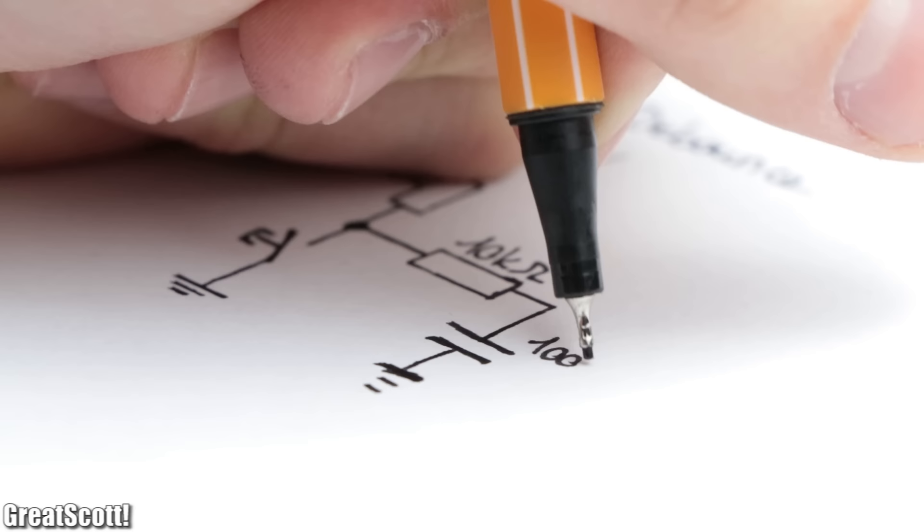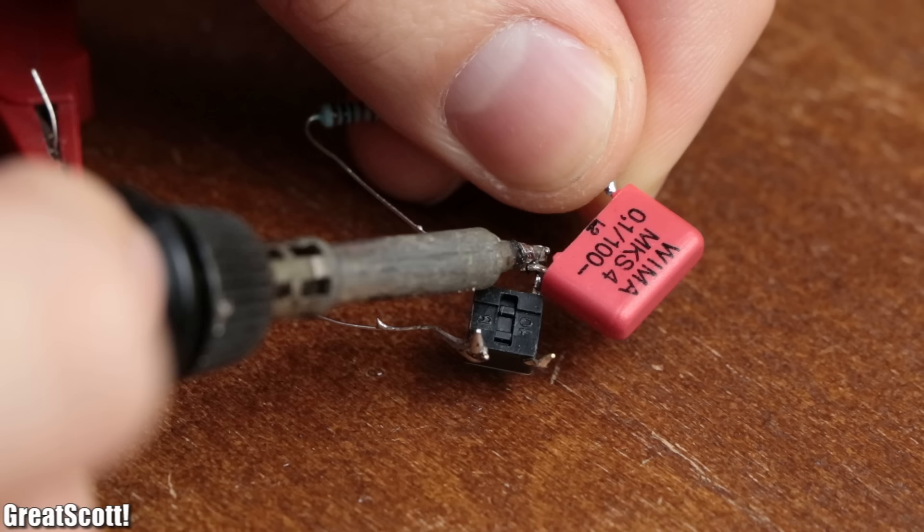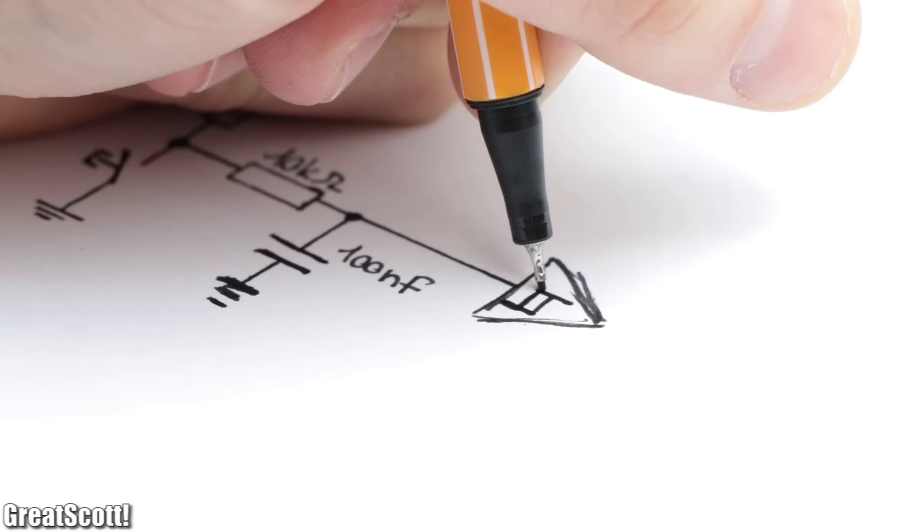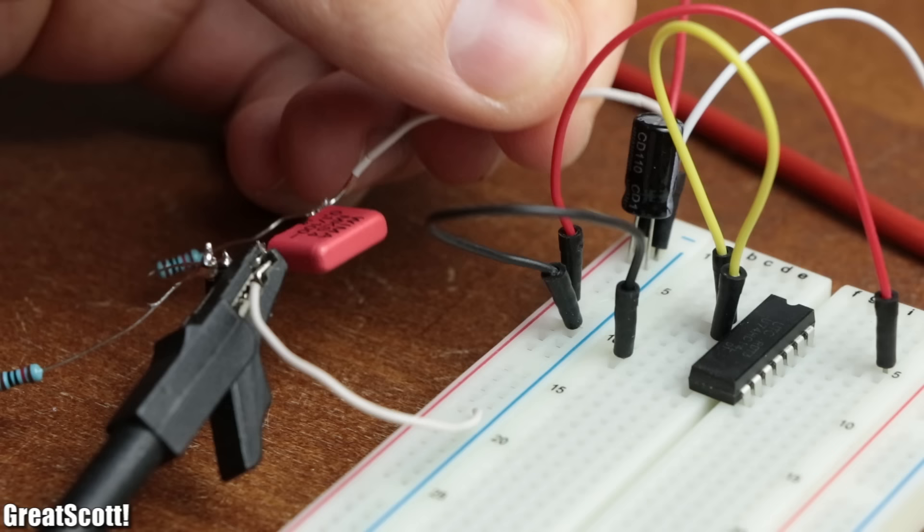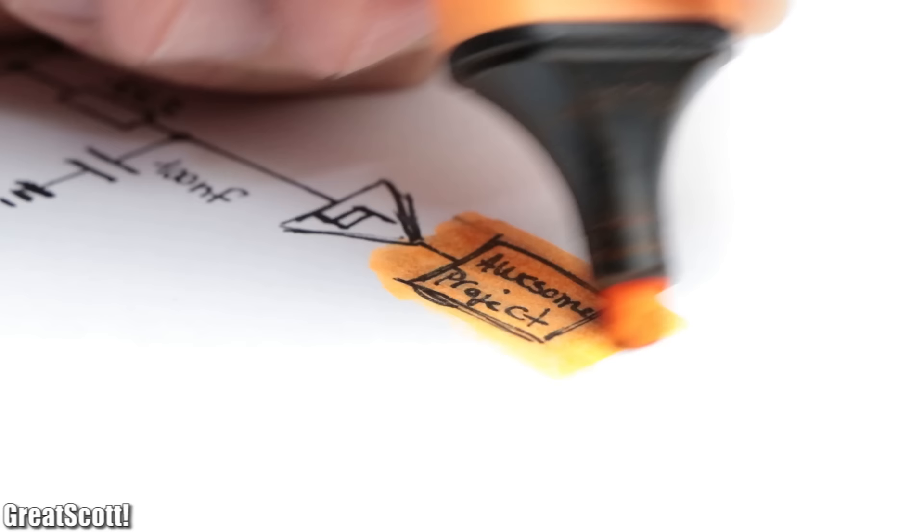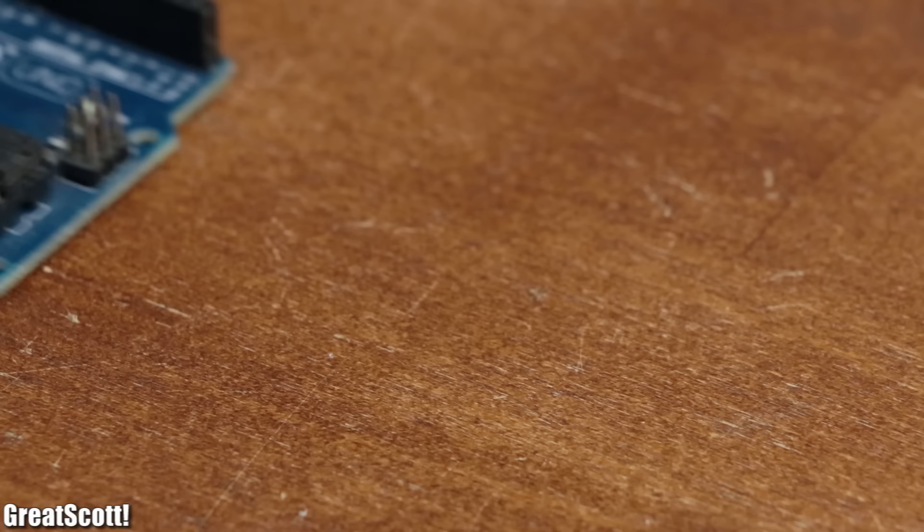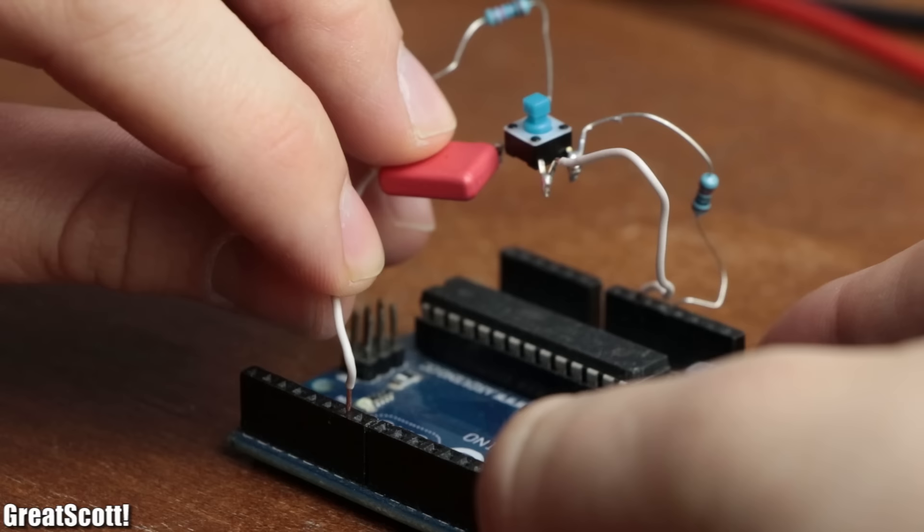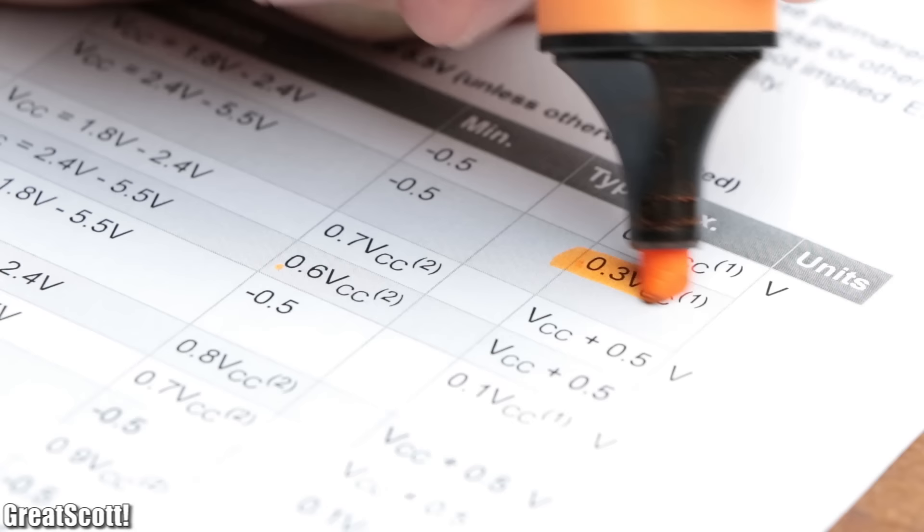That is why we must debounce it by firstly adding an RC network to the output of the switch to decrease the rise/fall time of the bounces, so that we can afterwards add a Schmitt trigger in order to recreate the sharp edges and thus create a fluid switch transition perfect for our project. But then again, if you would try to add the push button to an Arduino circuit, then we would only need the RC network for the debouncing, since the digital inputs of the microcontroller